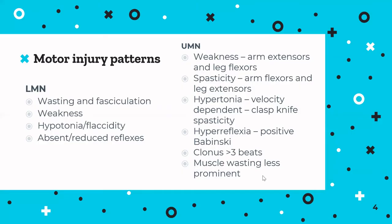A quick recap of lower motor neuron and upper motor neuron signs, because they still come up in exams. An easy way to fail a question is to forget: that's an upper motor neuron sign, that's a lower motor neuron sign — therefore that must be motor neuron disease because it's a mixed presentation, or that one must be MS because it's an upper motor neuron presentation.